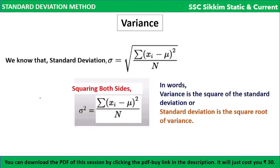The last concept is variance. The standard deviation sigma is the square root of the summation of (xi − μ)² divided by n. Variance is defined as the standard deviation whole squared — that is, variance = sigma².